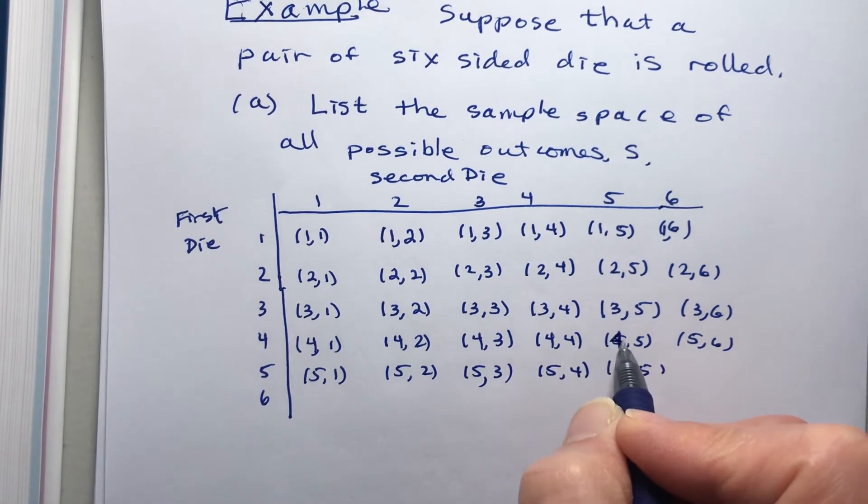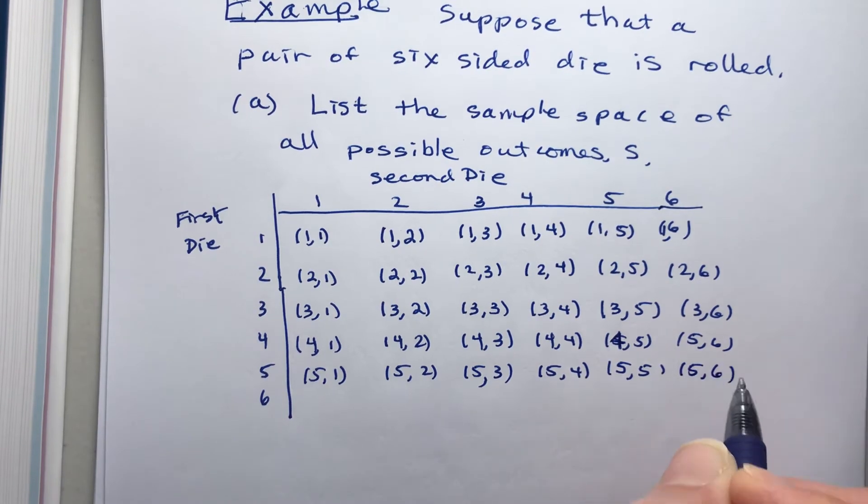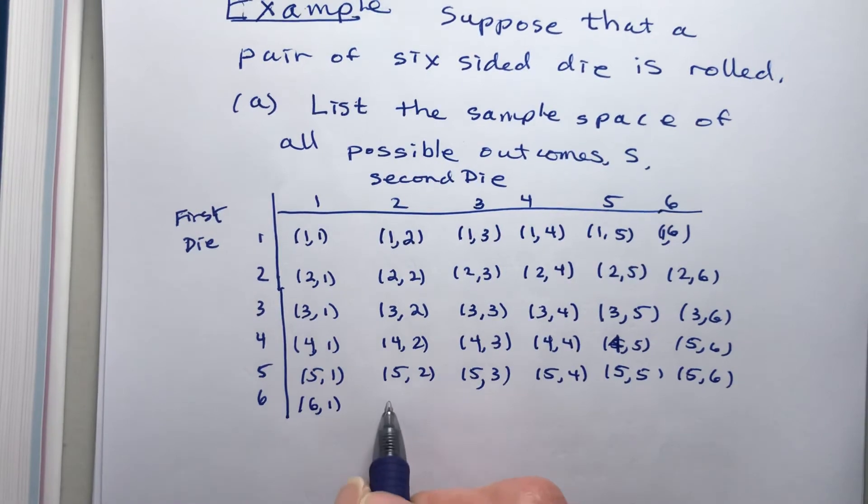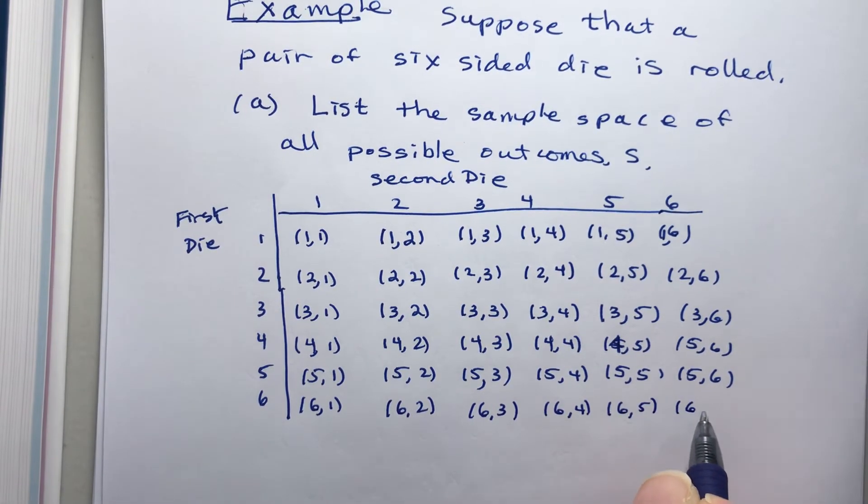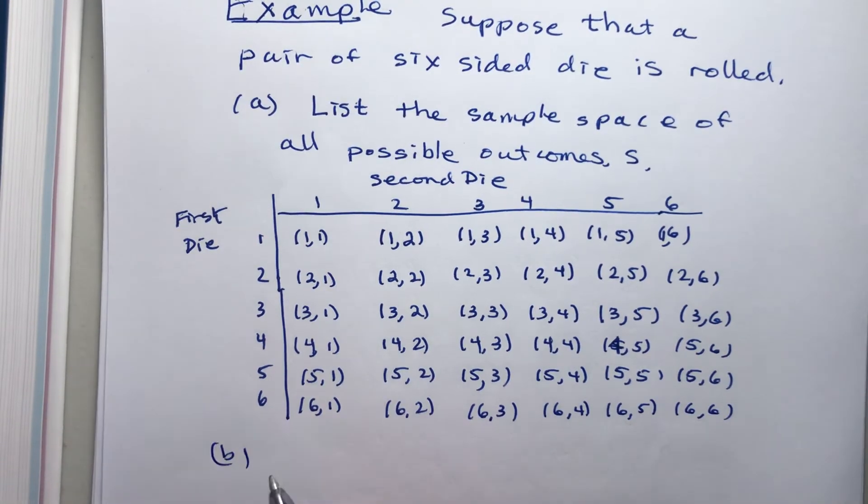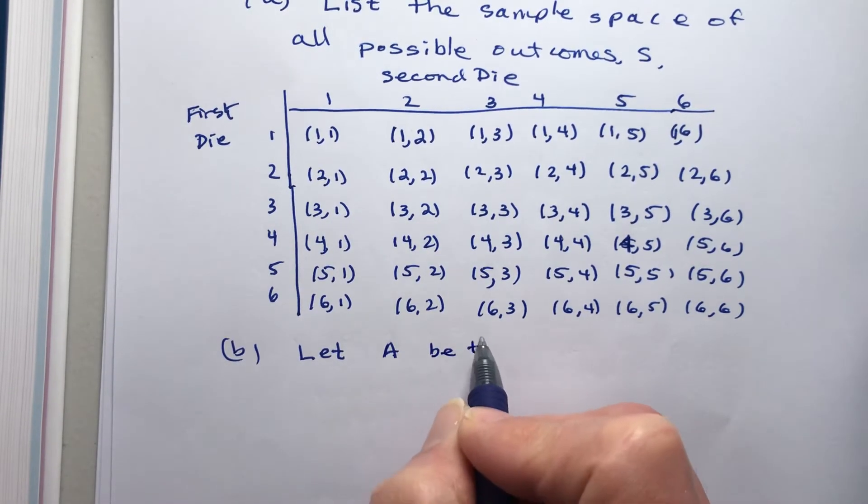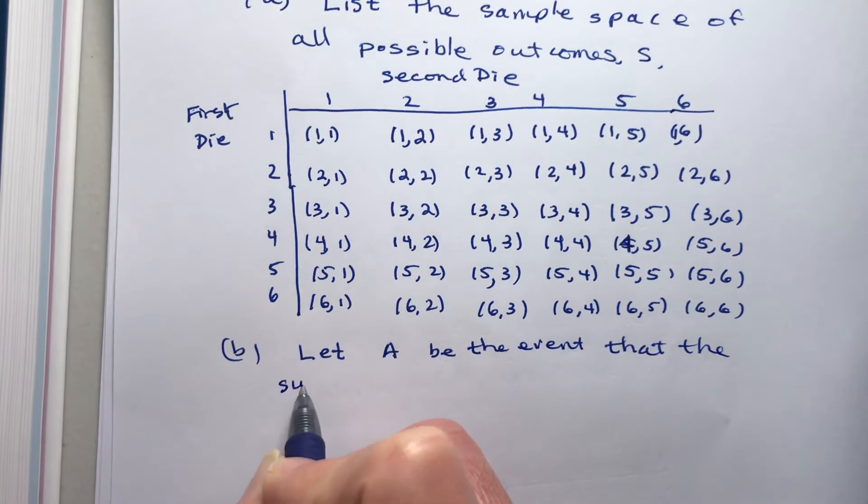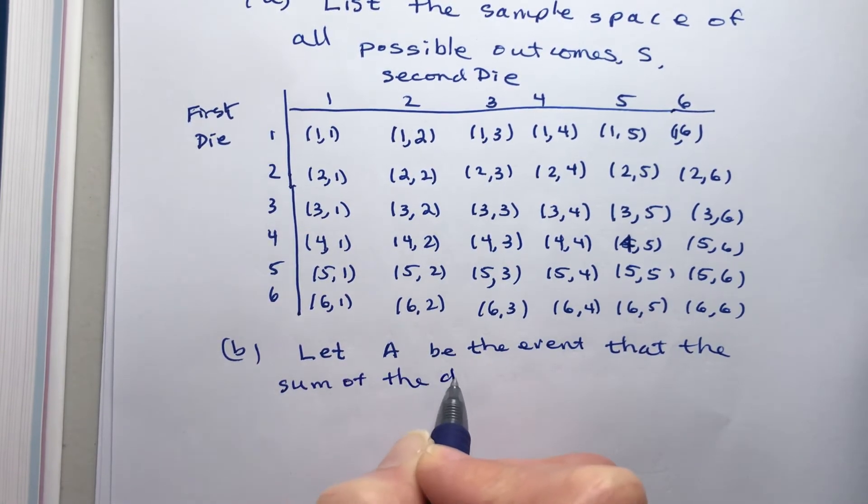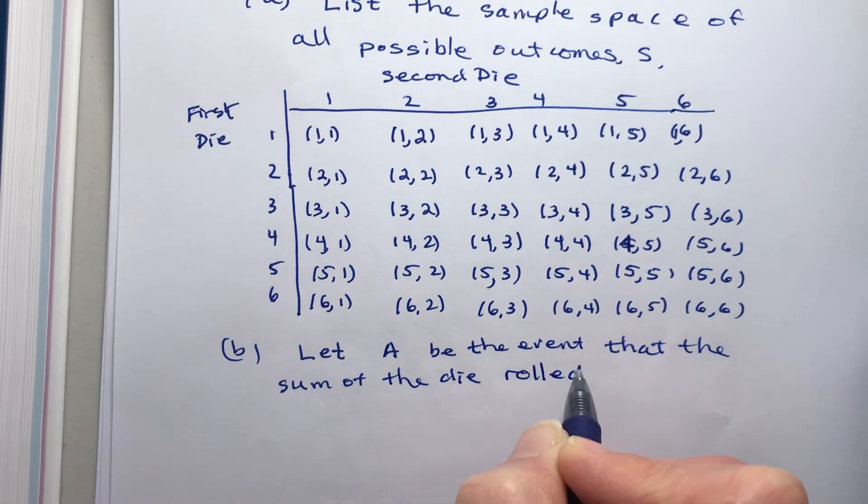This one's a mistake. It should be (4,5). All right, so let's do problem B, which is to find the probability that the sum of the dice rolled is seven.